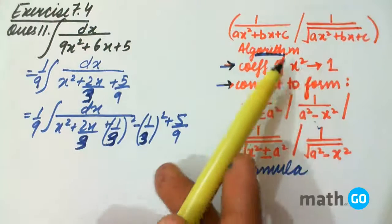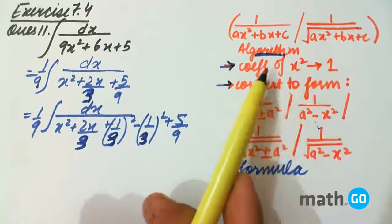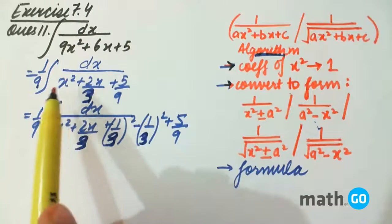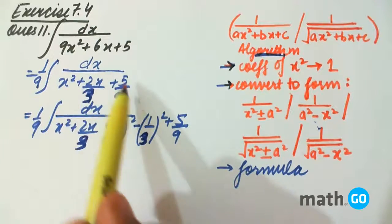How? One algorithm is first making the coefficient of x equal to 1. We have done this - taking 9 common, we are left with this.